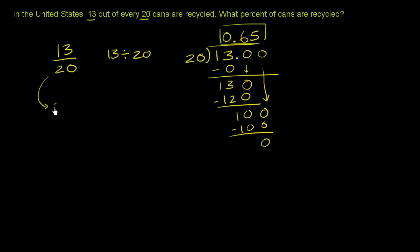So as a decimal, it's 0.65. And if you want to write it as a percentage, you essentially multiply this by 100. Or another way you could say is you shift the decimal over two spots to the right. So this is going to be equal to 65%.